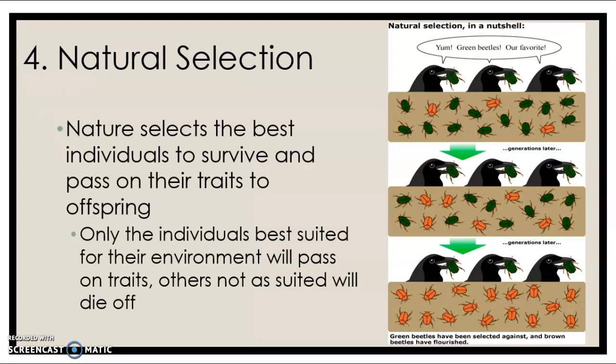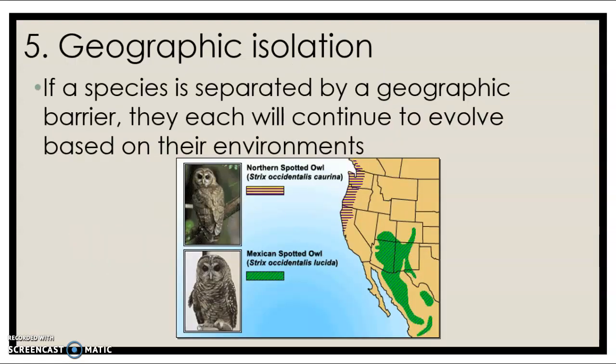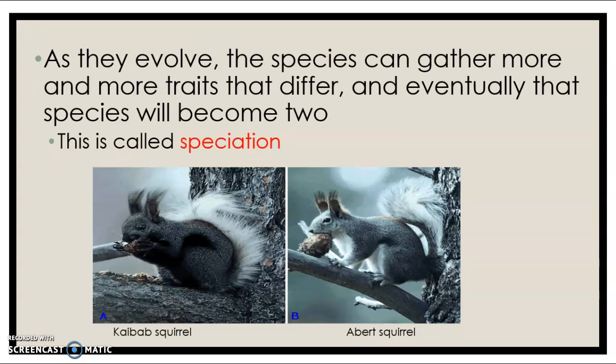Natural selection is when nature selects the best individuals to survive and pass on their traits to offspring. Only the individuals best suited for their environment will pass on these traits, and the others will die off unable to pass on their traits. Geographic isolation is when a species is separated by some geographic barrier, and they continue to evolve separately because they cannot exchange genes. As they evolve, they gather more and more differing traits, and eventually become two completely different species — this is called speciation, as seen with two different types of squirrels.